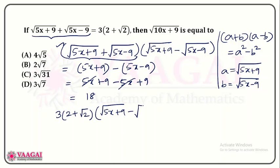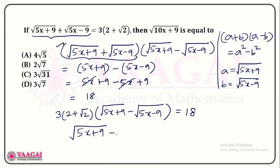The original expression equals 3 times of 2 plus root 2. We use this here, so we get 3 times of (2 plus root 2) multiplied with root of 5x plus 9 minus root of 5x minus 9 equals 18.